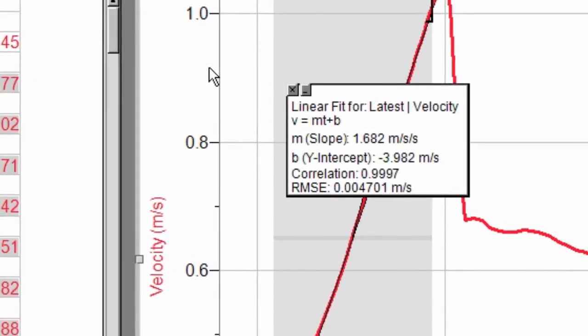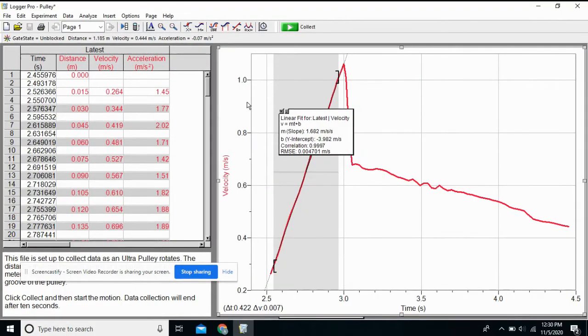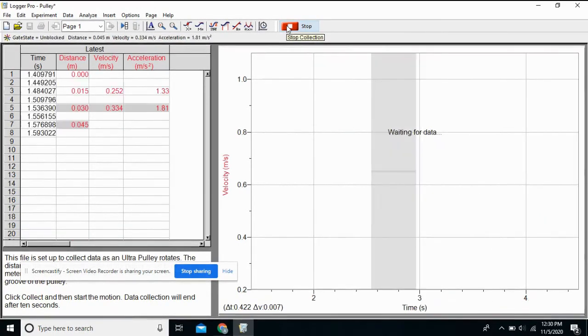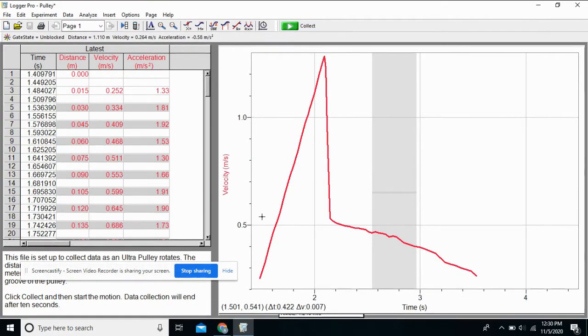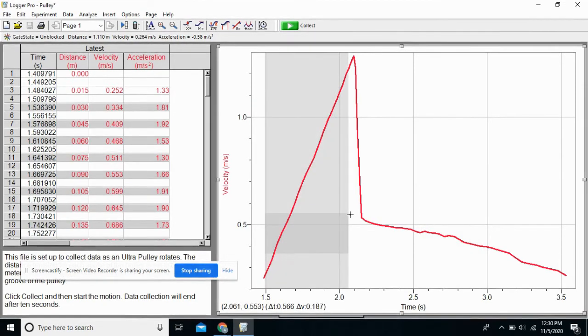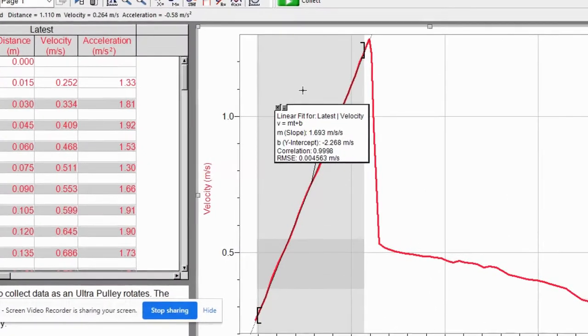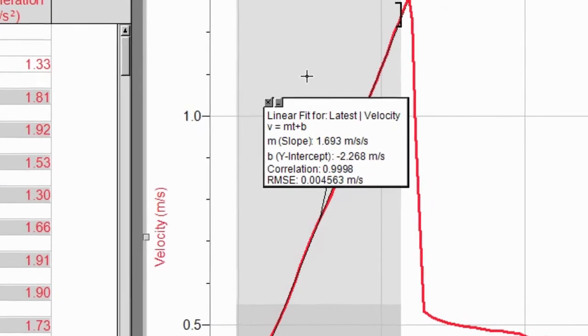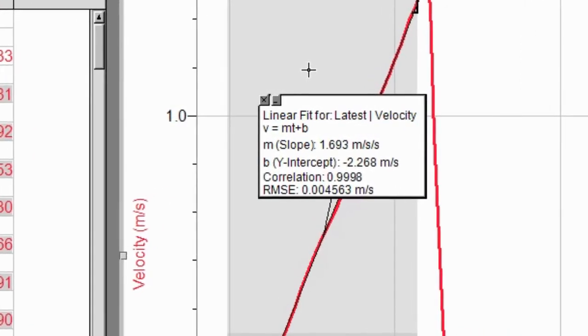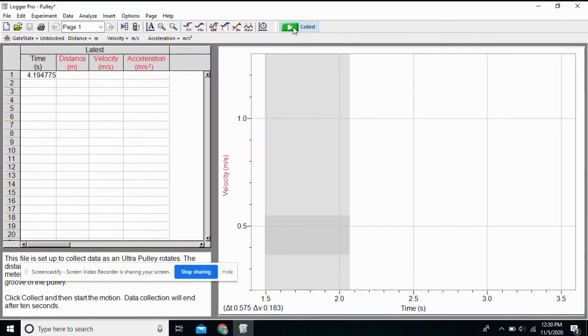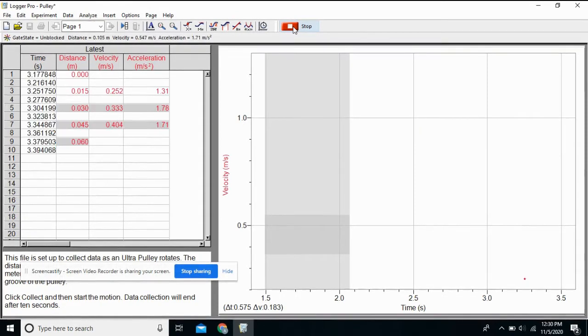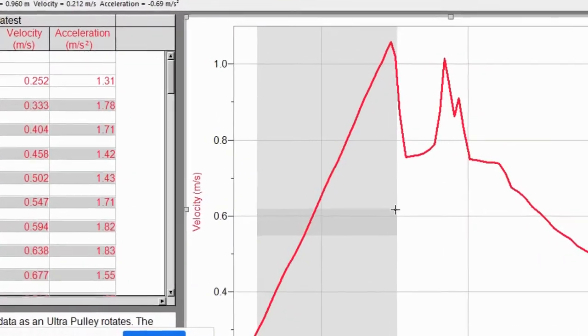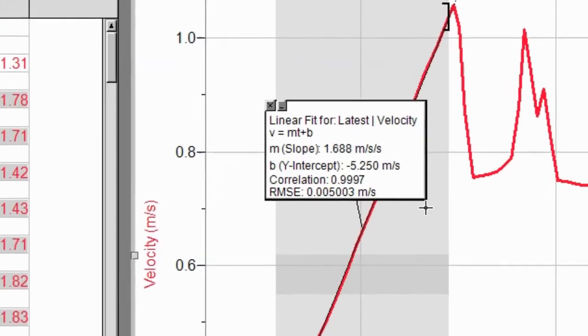Let's try that again. 1.693 meters per second squared. Two more. Here we go. Trial three. All right. Control J. A little bounce going on at the end, but during the time it's accelerating, I have a nice linear relationship. 1.688.